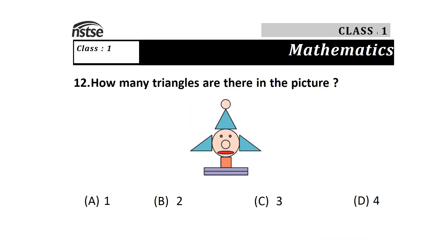Question 12: How many triangles are there in the picture? Options are A) 1, B) 2, C) 3, and D) 4. Look at the picture and count the number of triangles. It will be 3, so the answer is option C.